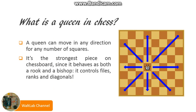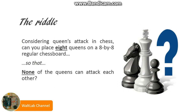So it can move freely in any direction for any number of squares, and if another piece is standing on her way, she will capture it. This is the only rule we need to know in order to proceed. The riddle is: can you place 8 non-attacking queens on a regular 8x8 chessboard, so that none of the queens can attack each other? This means that each queen is safe on its own square, without being afraid of getting captured by other queens.